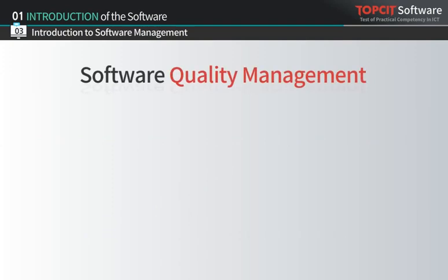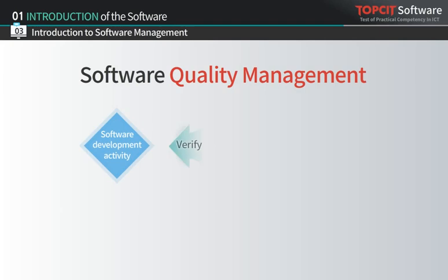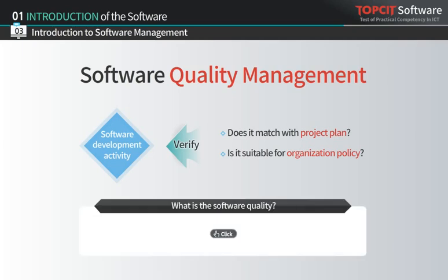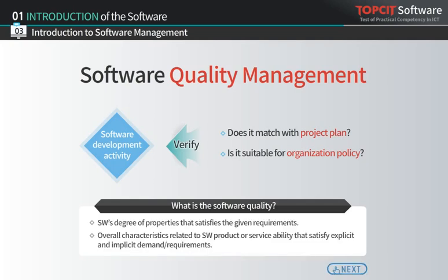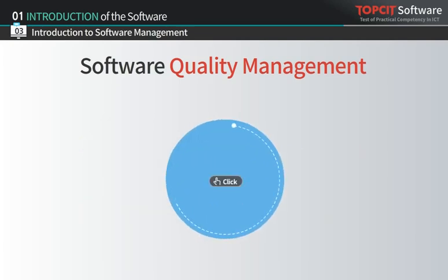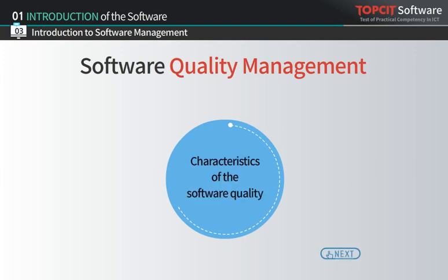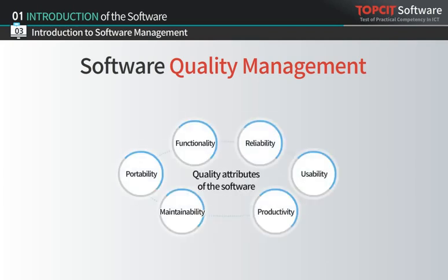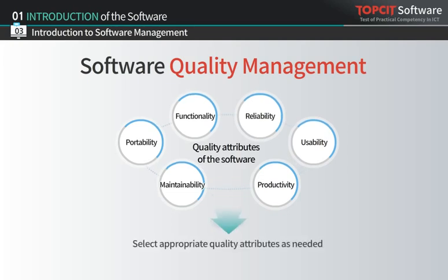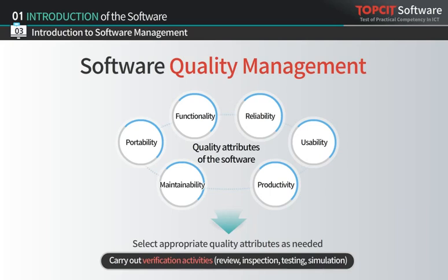Lastly, software quality management is an activity that verifies whether software development activity matches the project plan and meets the organization's policy. Software quality is difficult to classify in a universal and consistent way because of the variety of software with different purposes. Therefore, amongst such quality attributes, it is important to choose and apply the suitable one that corresponds to one's need and act on proper verification activity.